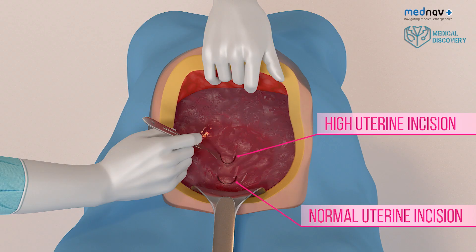The uterine incision must be made high to avoid injury to the bladder or vagina. To prevent extensions, ensure that a curved uterine incision is made and keep your wrist straight during delivery.